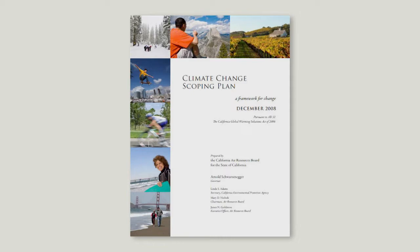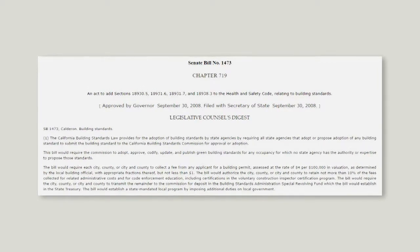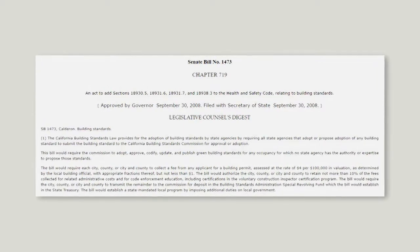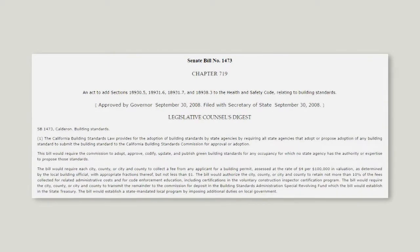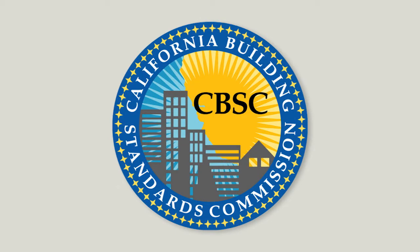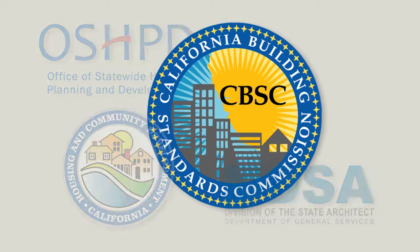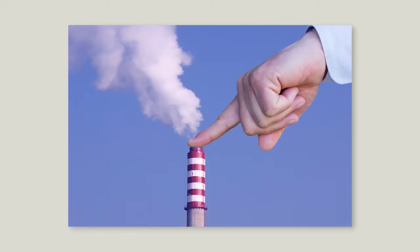Subsequent to AB 32, Senate Bill 1473 Statutes of 2008 specifically gave CBSC the authority to develop green building standards for occupancies for which no other state agency has authority. In response to these legislative mandates, CBSC worked closely with the Department of Housing and Community Development, the Division of the State Architect, and other state agencies to create new green building standards.